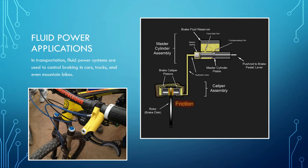In transportation, fluid power systems are used to control braking in cars, trucks, and even mountain bikes. The animation on the right shows us what will happen when you press on the brake pedal in a car. The pedal pushes on a piston, which pushes hydraulic fluid through tubes to the brake caliper pistons. The fluid pushes the pistons out, where they cause the brake pads to pinch on the spinning brake rotors, slowing the car down.